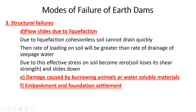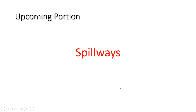These are the topics covered under earthen dams. The major portions to study are the different types of earthen dams, criteria for safe design, and the different modes of failure of earthen dams. In our upcoming lecture, we are going to explain spillways, the necessity of spillways, and the different types of spillways.